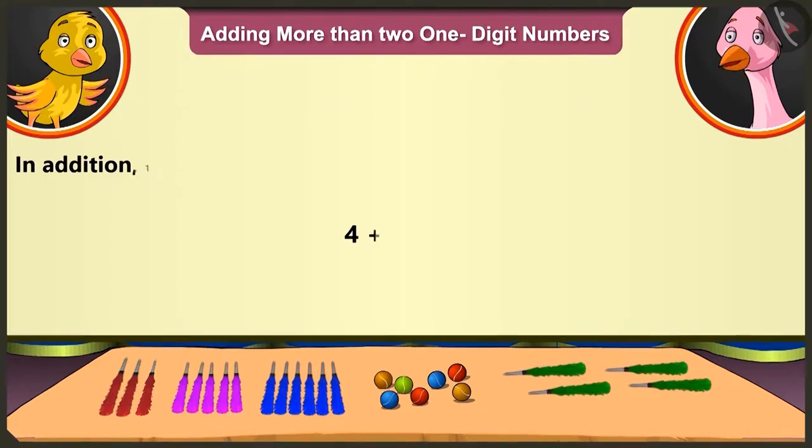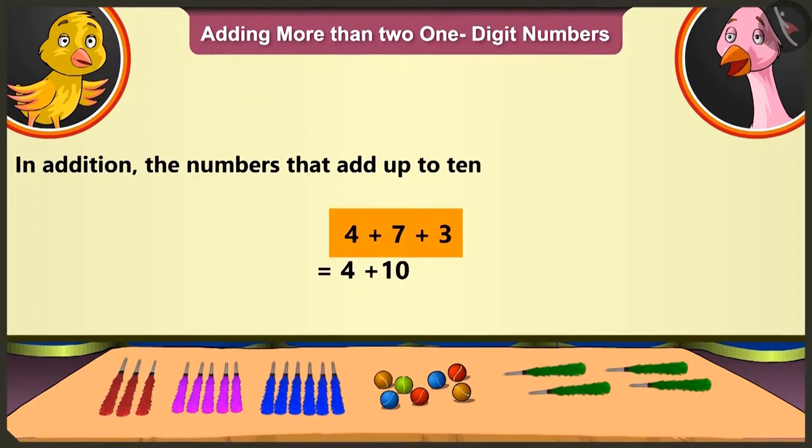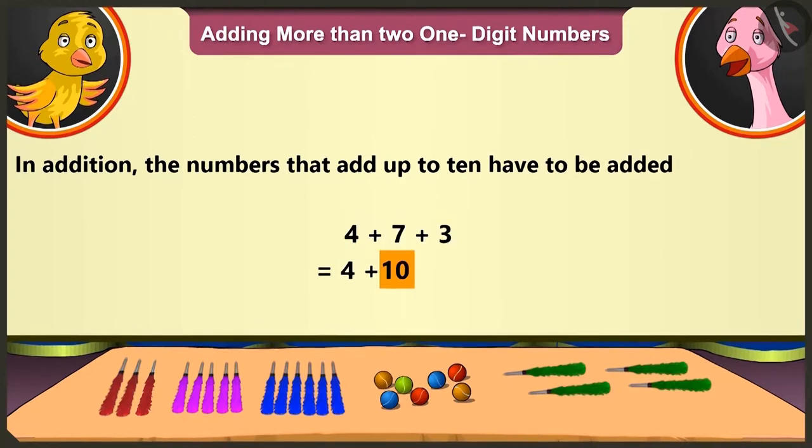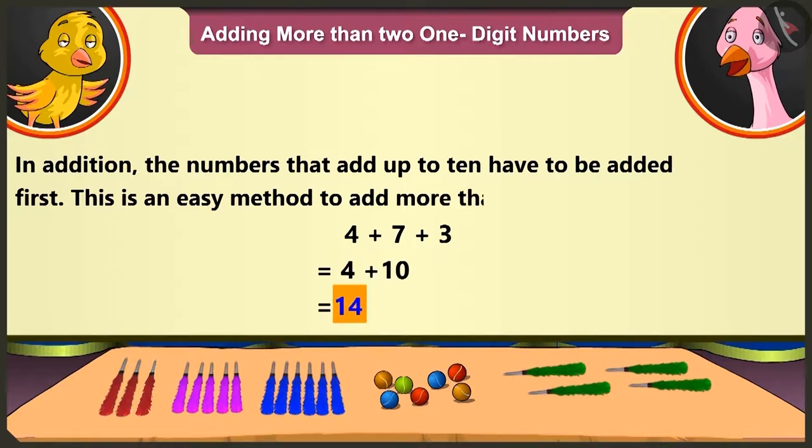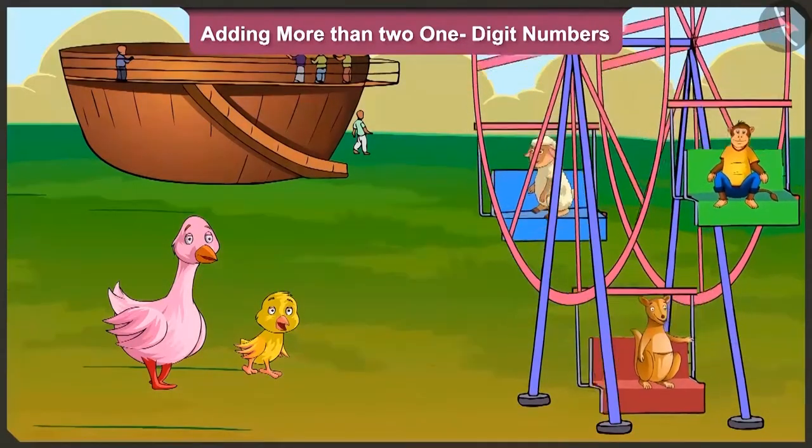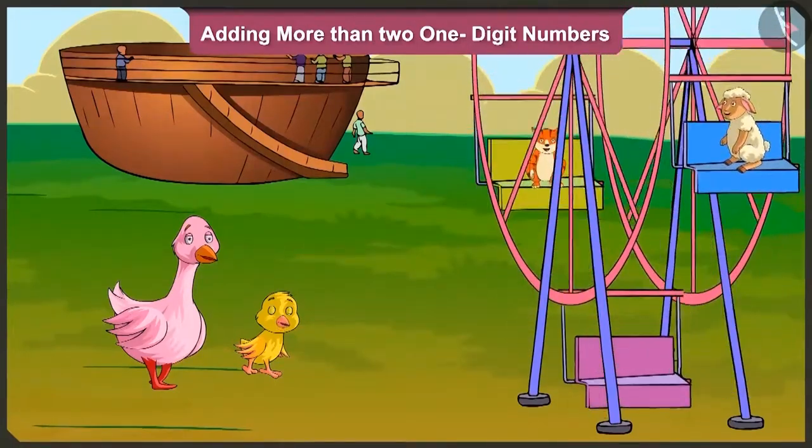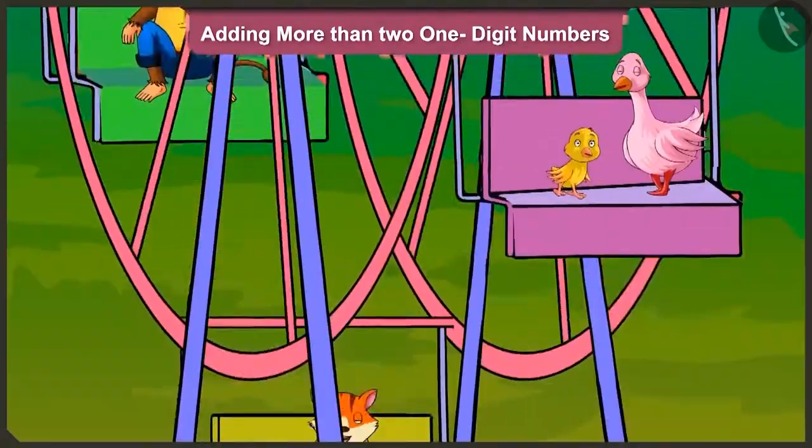This means that those numbers which add up to ten have to be added first. You got it right, Pilloo. As per the concept of addition, the numbers that add up to ten have to be added first. This is an easy method to add more than two one-digit numbers. Now let's go auntie, we will get a ride on the giant wheel. Yes, let's go.